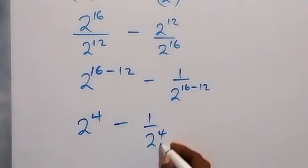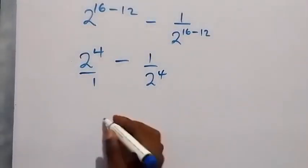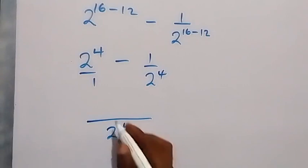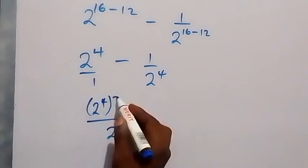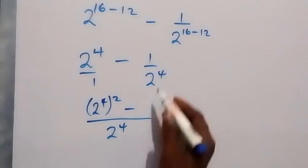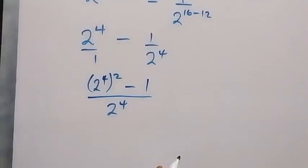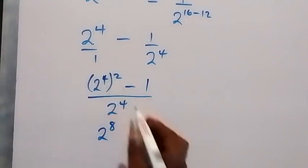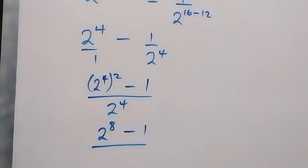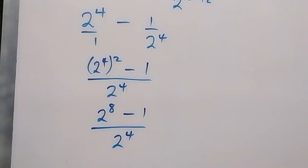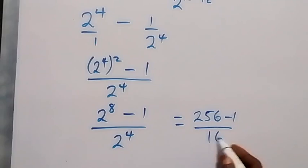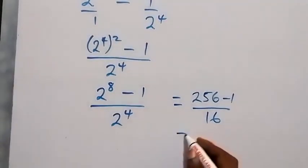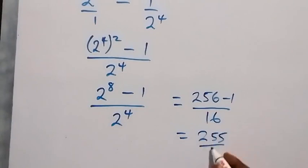We bring this together with LCM 2 raised to power 4. We get 2 raised to power 4 times 2 raised to power 4, minus 1, over 2 raised to power 4. This simplifies to 2 raised to power 8 minus 1, over 2 raised to power 4, which is 255 over 16. This is the same answer we got earlier.